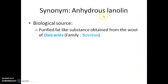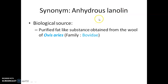The synonym of this drug is anhydrous lanoline. Lanoline is the hydrous form of Ulfat, so anhydrous lanoline is known as Ulfat. Biologically, Ulfat is obtained from purified fat-like substances derived from the wool of Ovis aries, Family Bovidae.